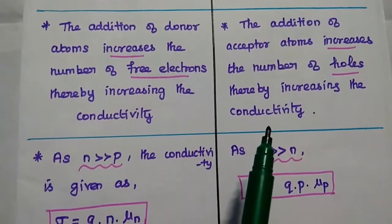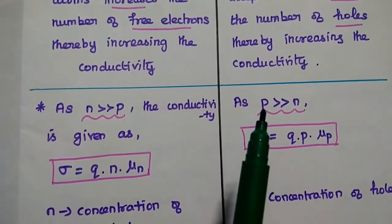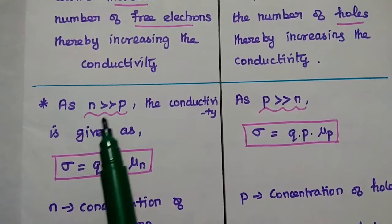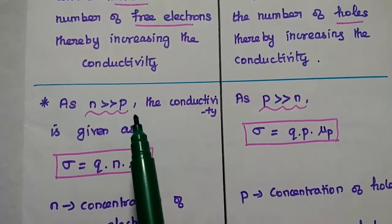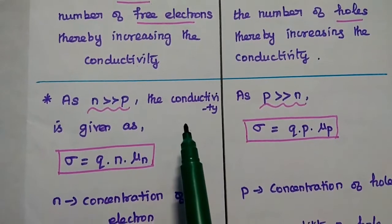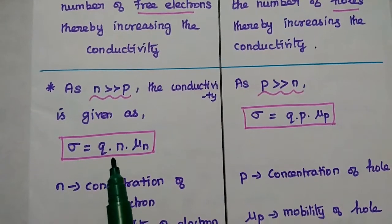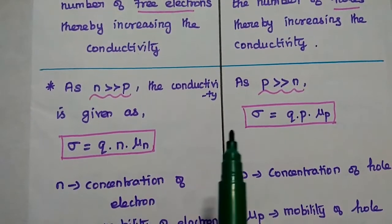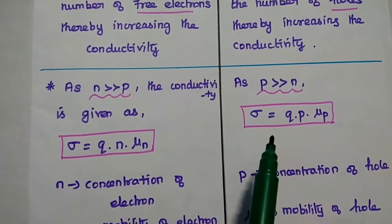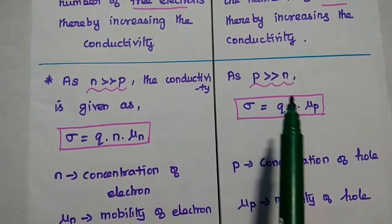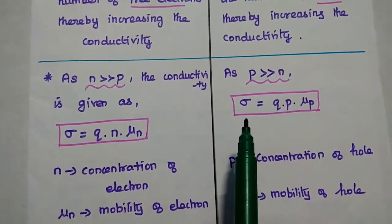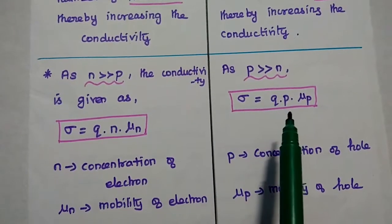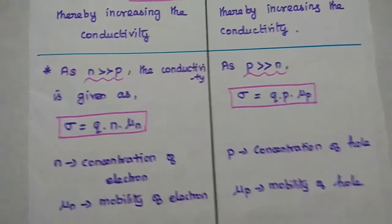In N-type material, electron concentration N is greater than hole concentration P. The conductivity sigma is equal to Q × N × μN. For P-type, P is greater than N, and the conductivity sigma is equal to Q × P × μP.